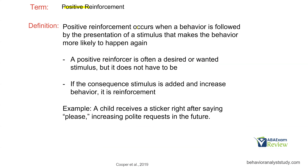Positive reinforcement occurs when a behavior is followed by the presentation of a stimulus that makes the behavior more likely to happen again. You have an antecedent, a behavior occurs, and then a consequence is added which increases behavior. A positive reinforcer is often a desired or wanted stimulus, but it doesn't have to be, because we're not necessarily concerned with the topography or the preference — we're just looking at how does that consequence change behavior. We're going to use anything that increases the behavior as reinforcement. If the consequence stimulus is added and increases behavior, it is reinforcement.